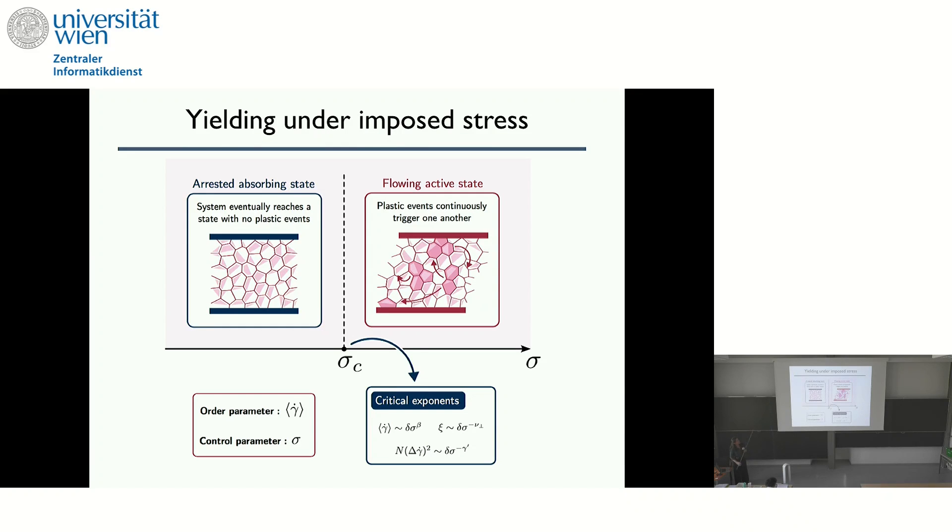So that means that depending on the imposed stress, I can be either in this arrested absorbing state or in the flowing active state. And this looks very much like an absorbing phase transition. We studied this scenario in the framework of an absorbing phase transition. So the order parameter will be the shear rate and the control parameter will be the stress. And then, of course, we are searching for critical exponents like this is the flow curve exponent, the correlation length exponent, and fluctuations.